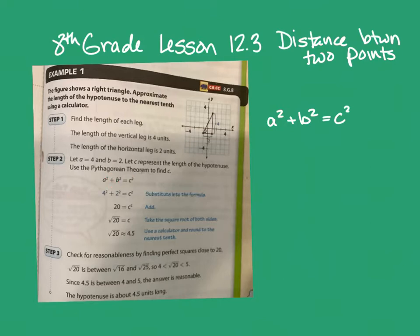A is four and B is two, so A squared plus B squared equals C squared. Four squared plus two squared equals C squared. That's 16 plus four, which is 20. In order to isolate the variable C, we need to take the square root of C squared and do the same to the other side of the equation. We find out that this length is 4.5 for the distance between.